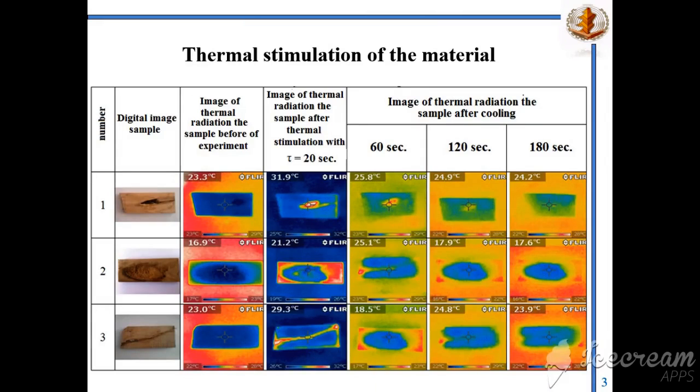According to the results of analytical studies, it was found that the most effective non-destructive methods of control for assessing the quality of sawn timber are acoustic, radiation, and thermal.